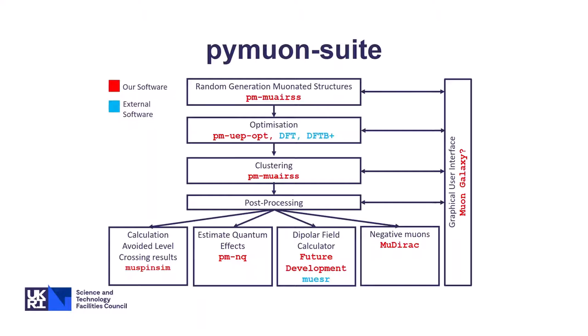The muon science pipeline has a few stages. You start out with your structure, you add a muon to it in a random location, then you optimize to figure out where the muon goes, and you do that maybe a hundred times. Then you look at those hundred runs all together and see if there are locations where the muon tends to end up — those are likely to be your stopping sites. Once you have that information, you can do all sorts of post-processing and study material properties. PyMuon Suite contains command line tools for each of these stages, and what we want from a graphical user interface is to be able to run those tools individually but also chain them into workflows to make the whole process simpler.